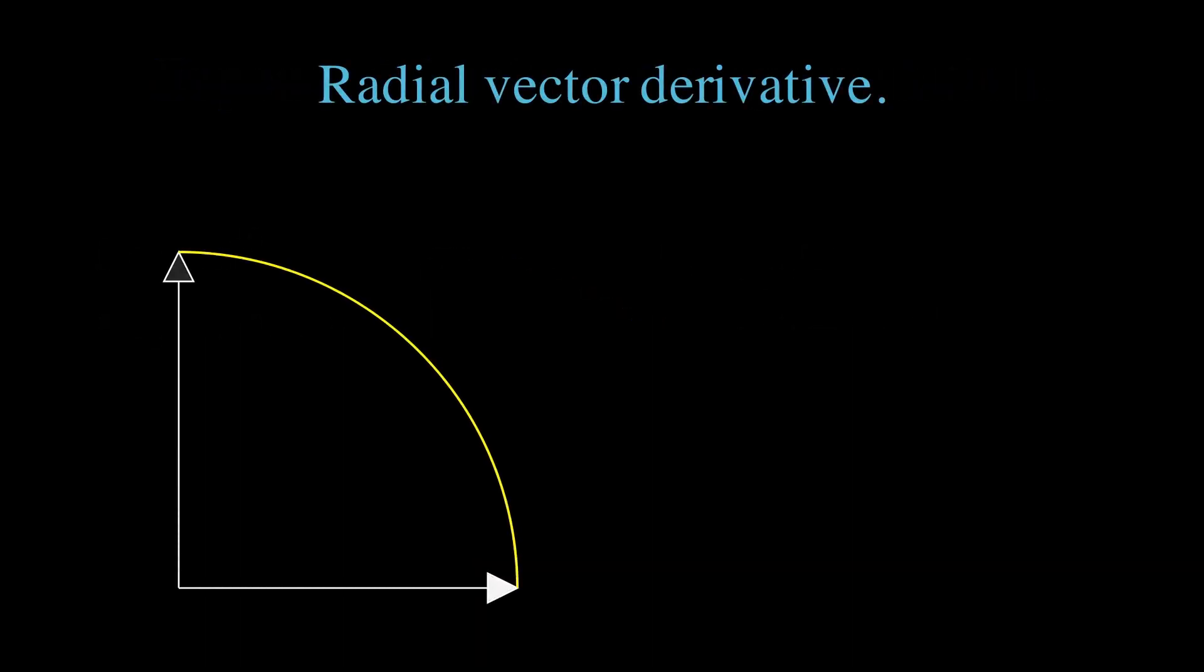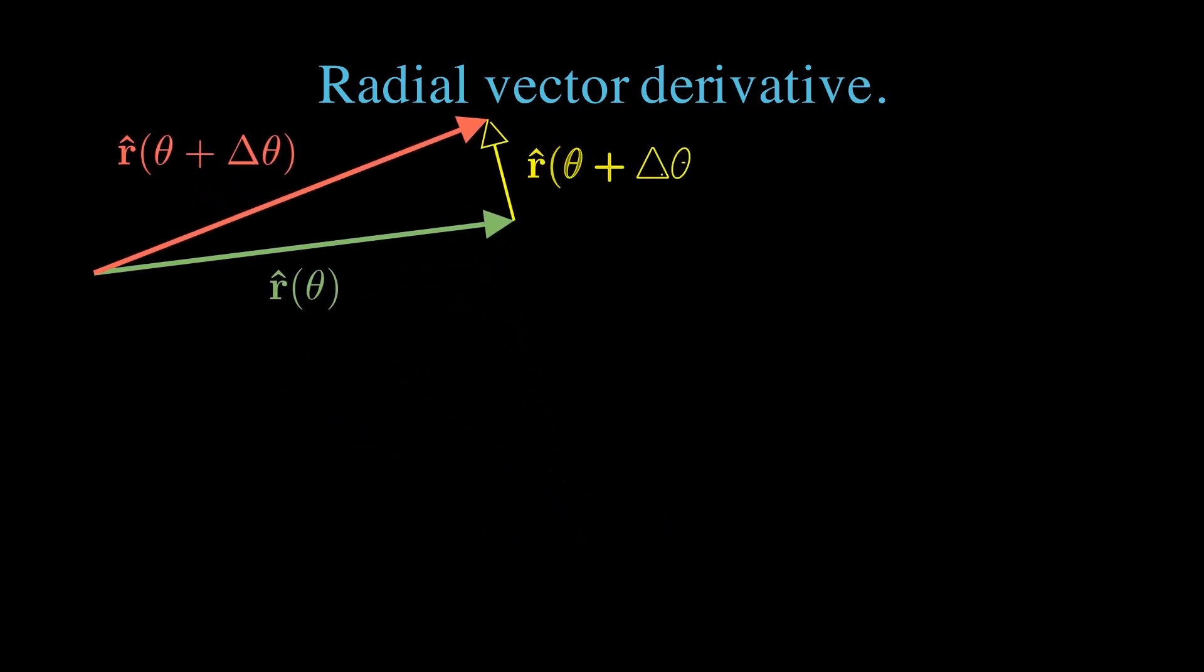We'll now compute the derivative of the radial unit vector. Imagine we have such a vector at an initial position at an angle theta, and then displace the angle by delta theta. Let's zoom in on the difference.